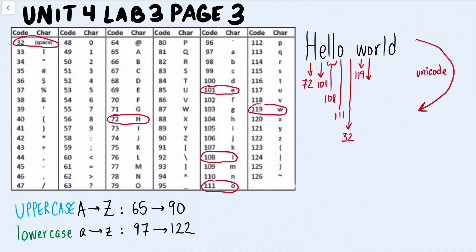The lowercase O, as we saw before, is still 111. R is going to be 114. L is going to be 108 again. And D is going to be 100.